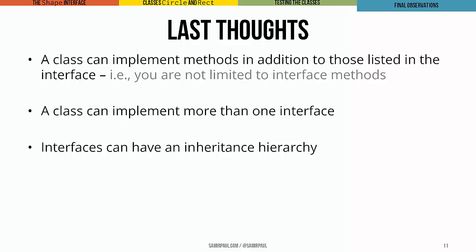Two more thoughts. A class can implement more than one interface, so you're not bound by just a single interface. That'll be different from something we'll see shortly with subclass and superclass relationships. But as far as interfaces go, a class can implement more than one. And finally, interfaces themselves can have an inheritance hierarchy, and we'll see more about what that means later.